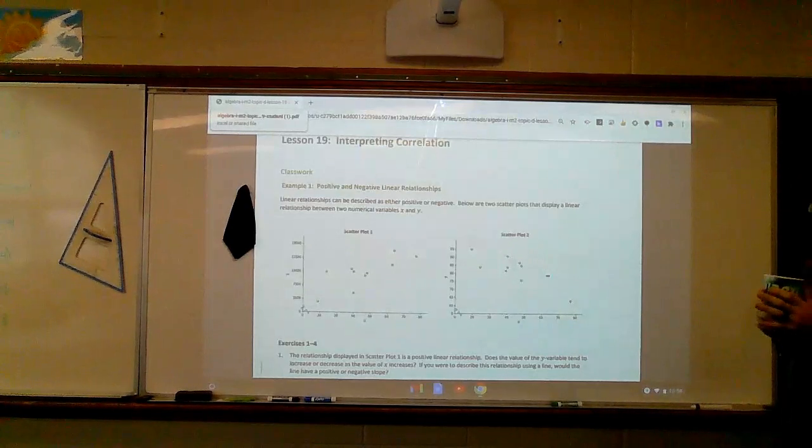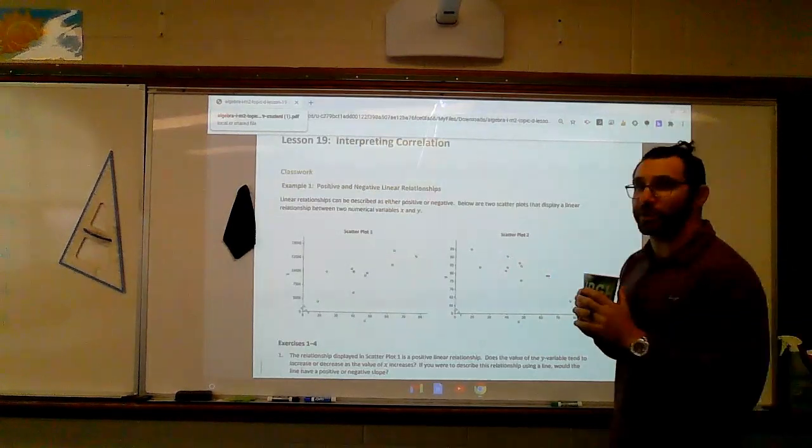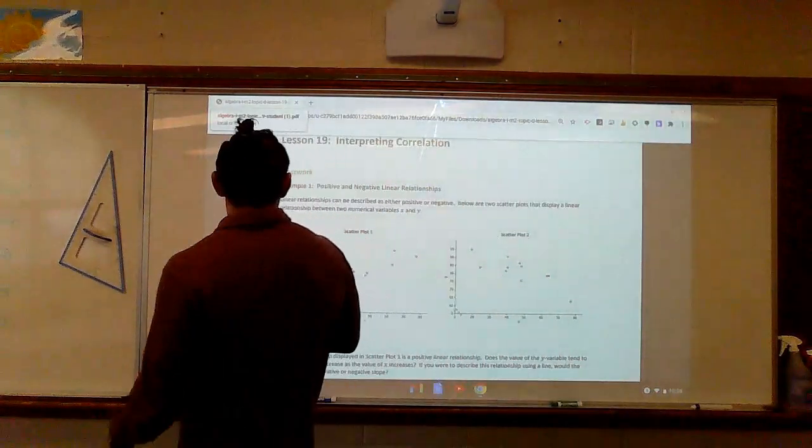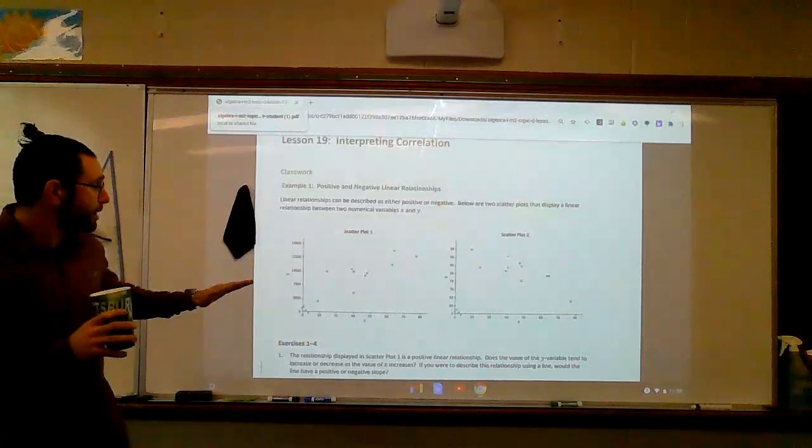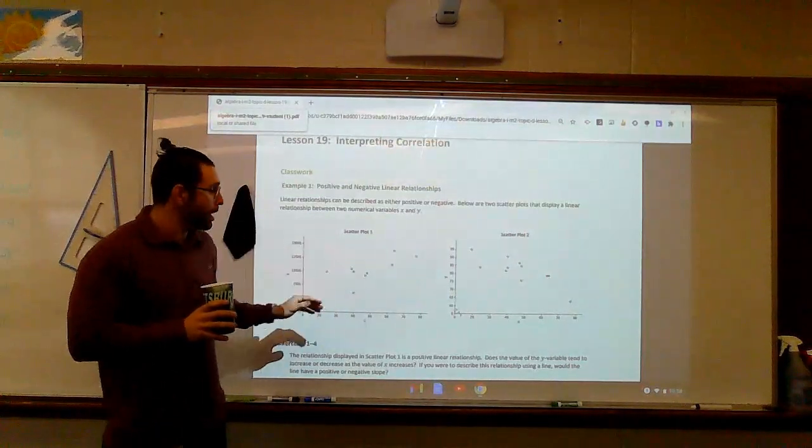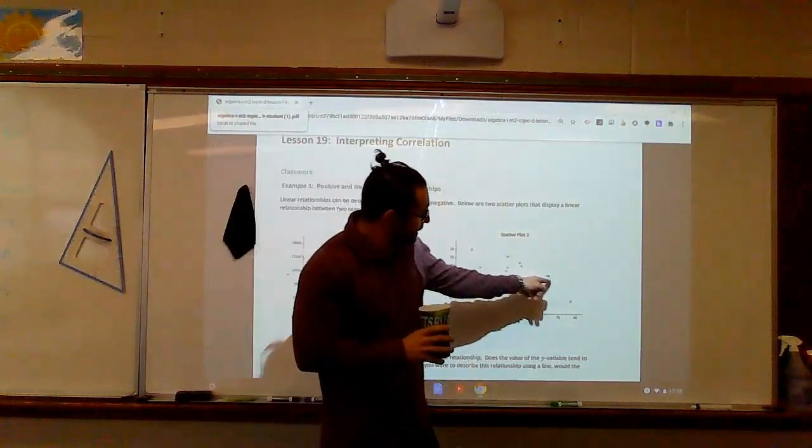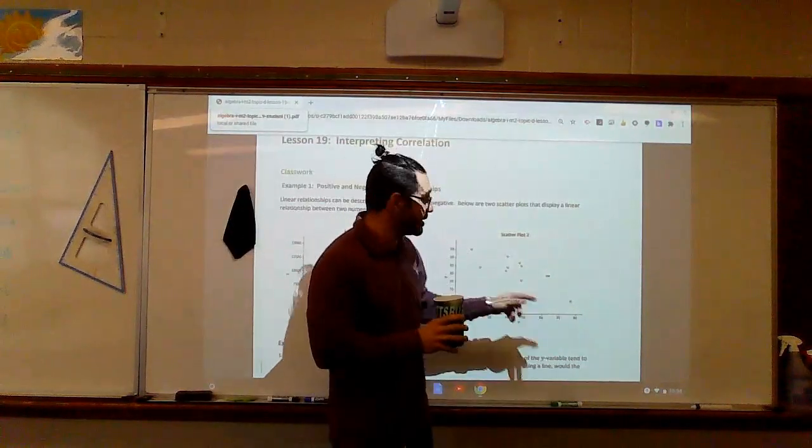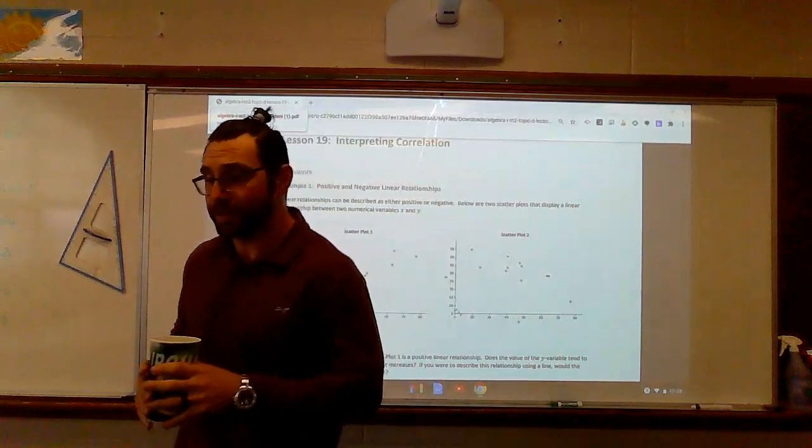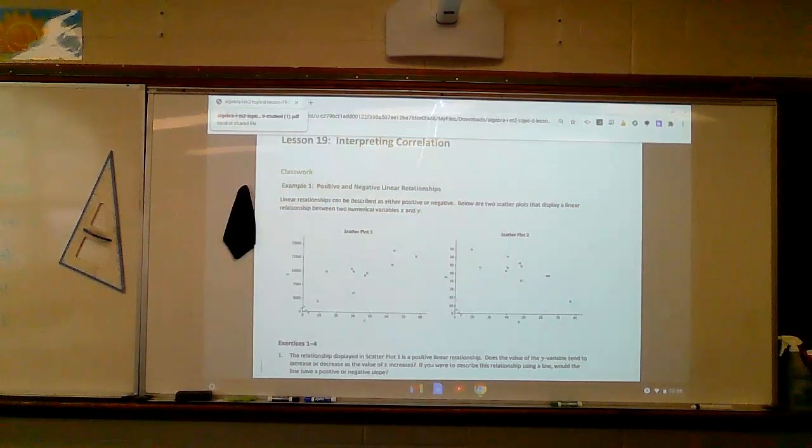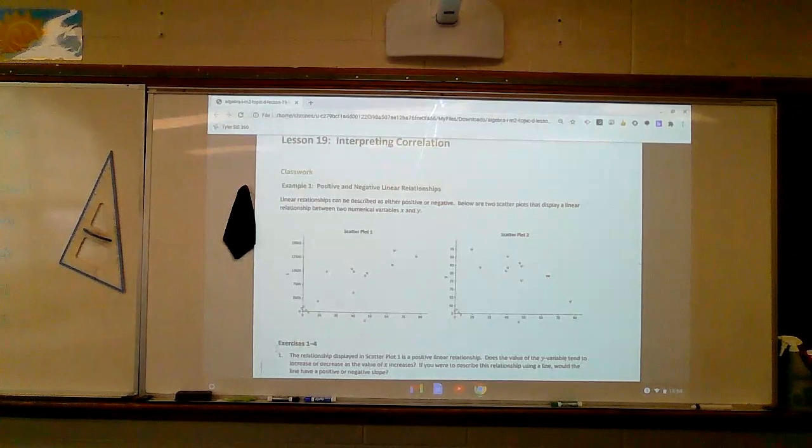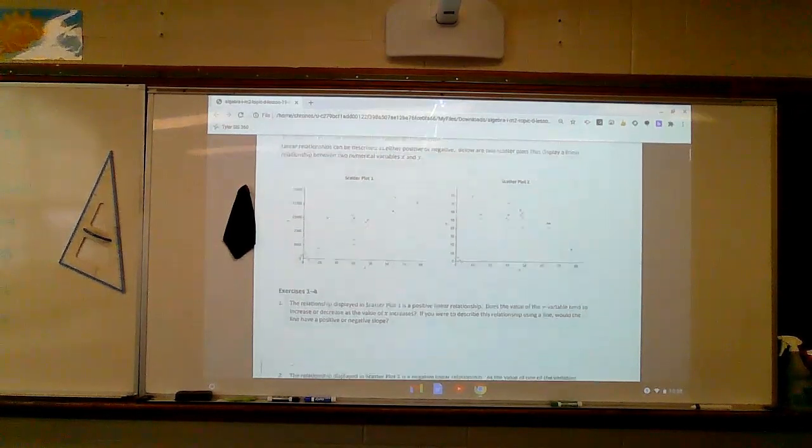When you look at these graphs, you should be able to say, hey, Mr. H, there's a positive relationship. There's a negative relationship. I've already talked to you about correlation. There is a positive correlation here because as X increases, Y appears to be increasing. There's a negative correlation. Why? Because as X increases, Y decreases. You should be able to look at that, and there are no problems when you look at that. But what does that mean? Well, there are stronger and weaker correlations.